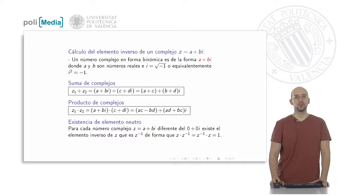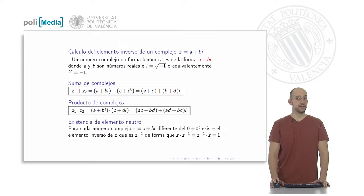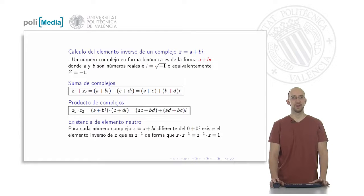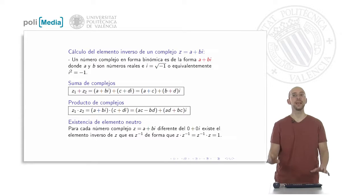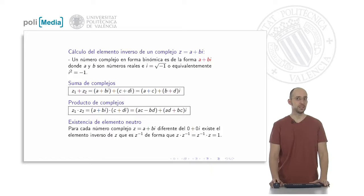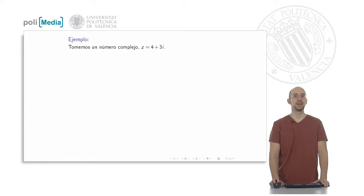Remember that there is a neutral element and an inverse element in the properties of multiplication. This means that for every complex number different from zero plus zero i, there is an element called the inverse, such that multiplying z times z to the power of minus one gives the neutral element, one plus zero i.